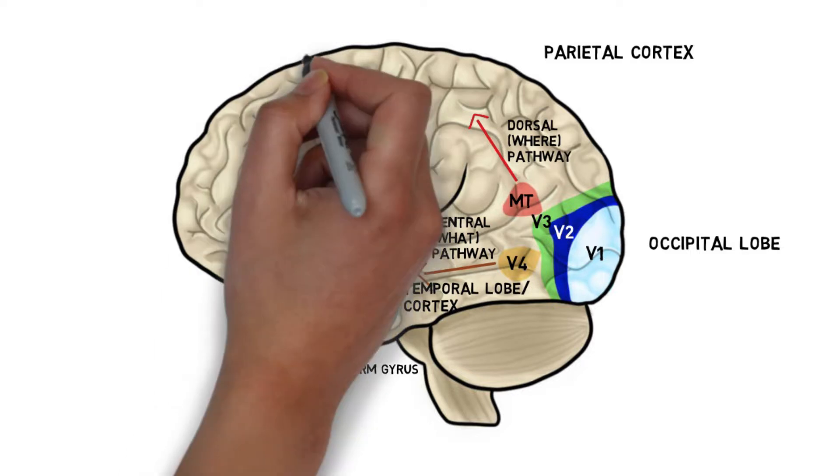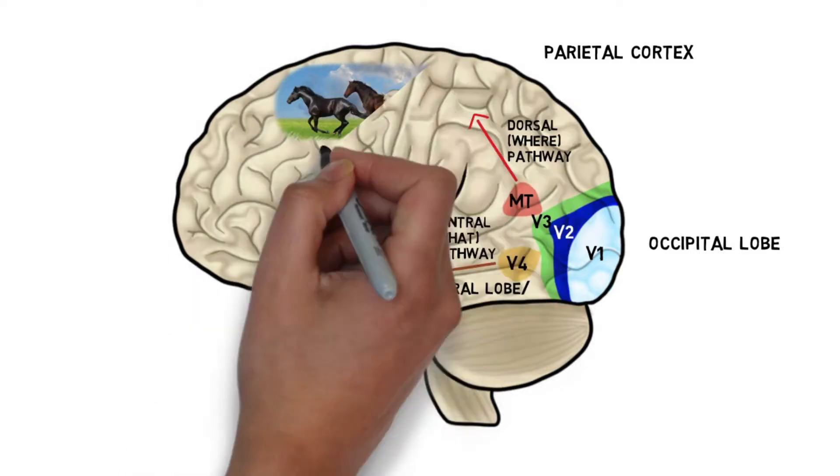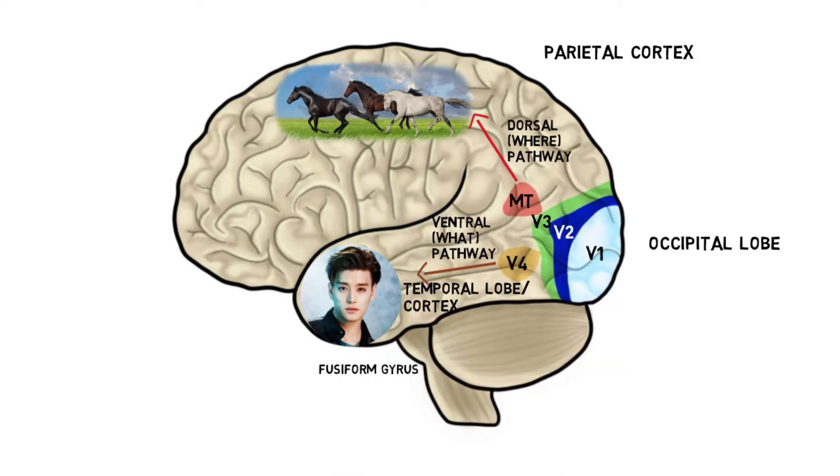While the where pathway provides information regarding object location and is involved in the process of important visual attributes such as object motion.